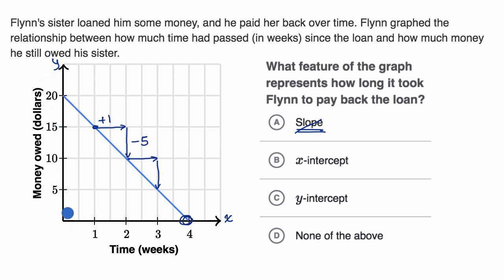Our y value is the money owed, so the x-intercept tells us how much time has passed when Flynn doesn't owe any more money to his sister. That's exactly what they're asking: how long did it take Flynn to pay back the loan? And that's what the x-intercept tells us — it took him four weeks. After four weeks, he didn't owe any more money to his sister. So I like this choice.